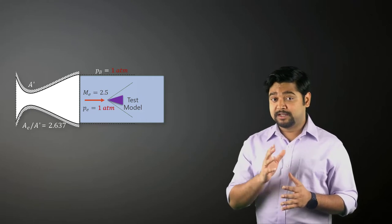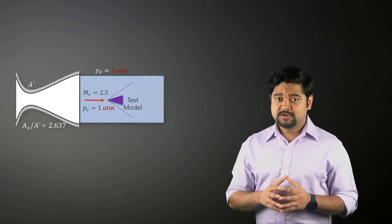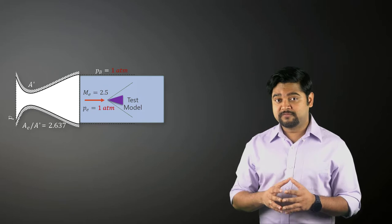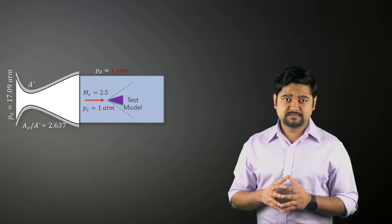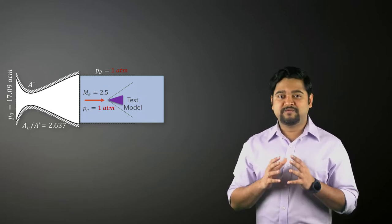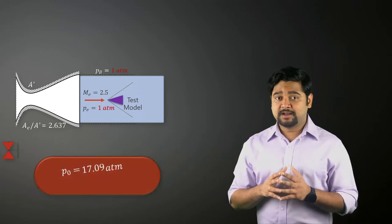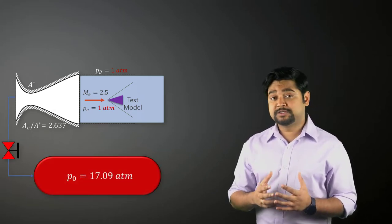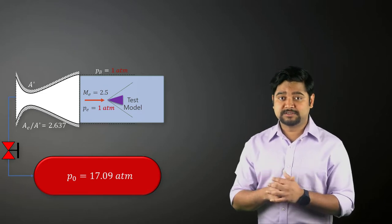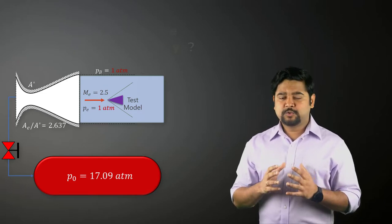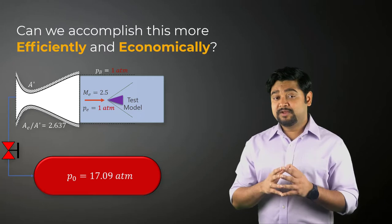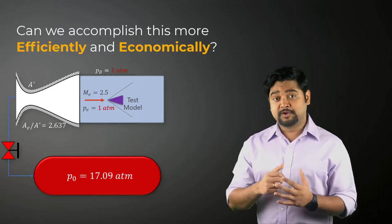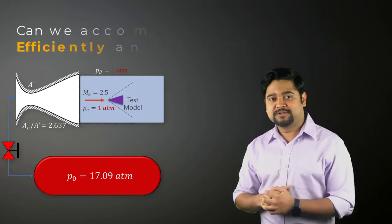This would mean that the inlet of our CD nozzle would need a pressure reservoir of 17 atm. Such a setup would be very expensive to build and operate due to the higher costs associated with such high pressure reservoirs and devices. So the question is, can we accomplish this more efficiently and economically? Let's find out.